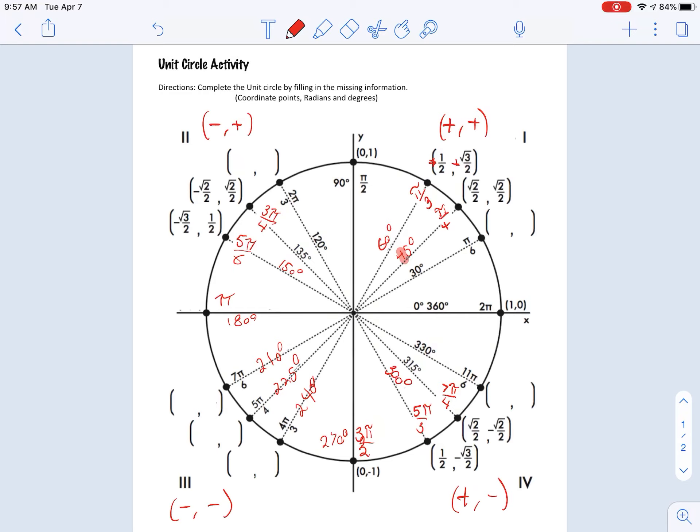And then what we did in class is we took this first quadrant. This first quadrant, what we're going to be seeing is that each of these values, we're able to go ahead and make the different values using what's already given.